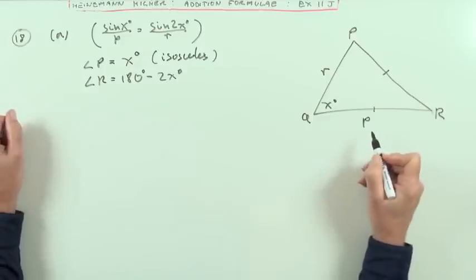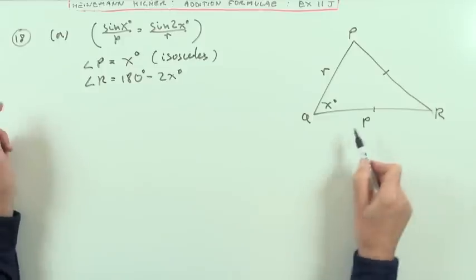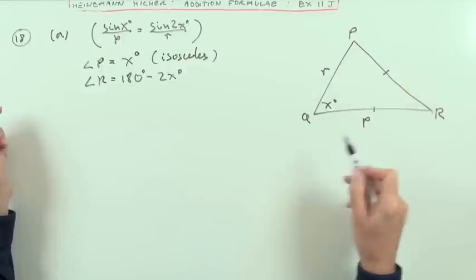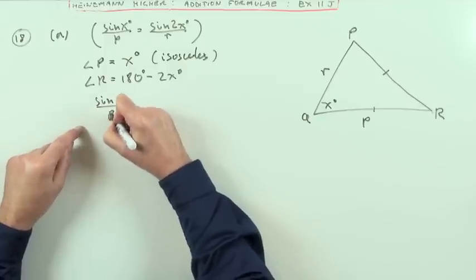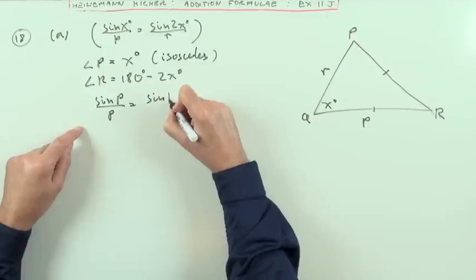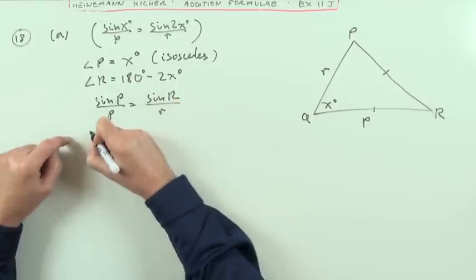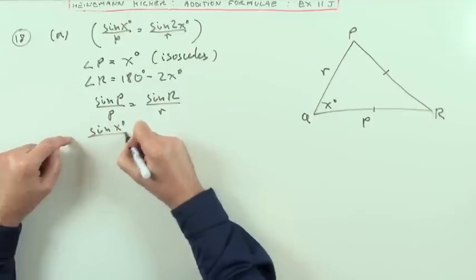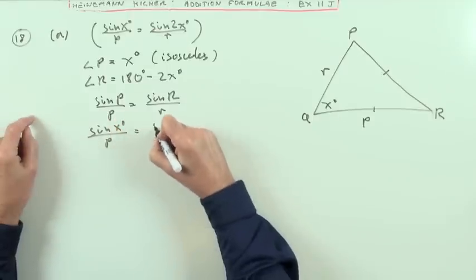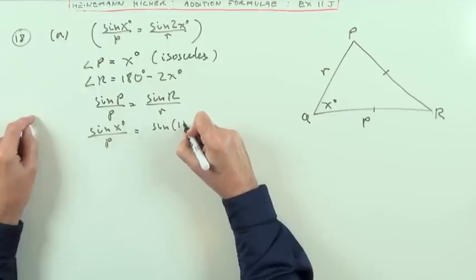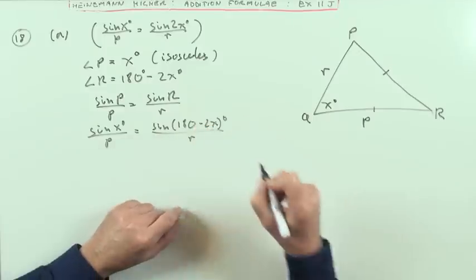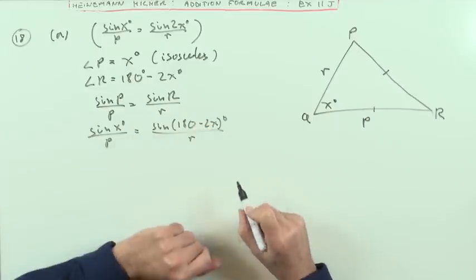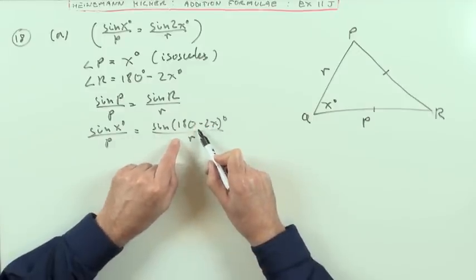Now I can use my sine rule, so if I start with the one for P, I've got, I'll just write it down, sine P over P would equal sine R over R. So sine X over the P will be sine of 180 minus 2X over the R, and that's straightforward with the one that you know.